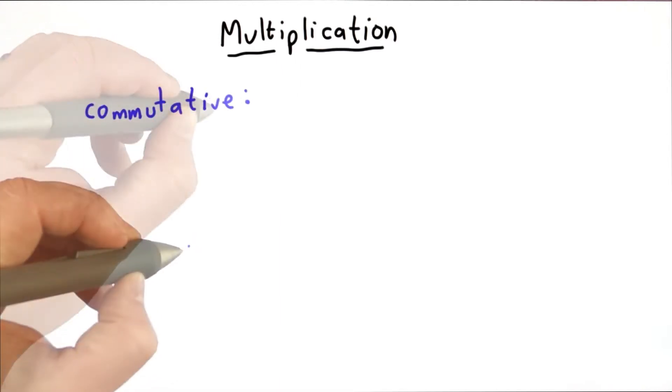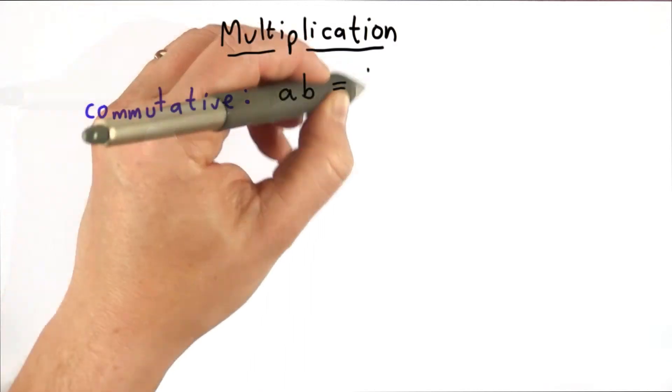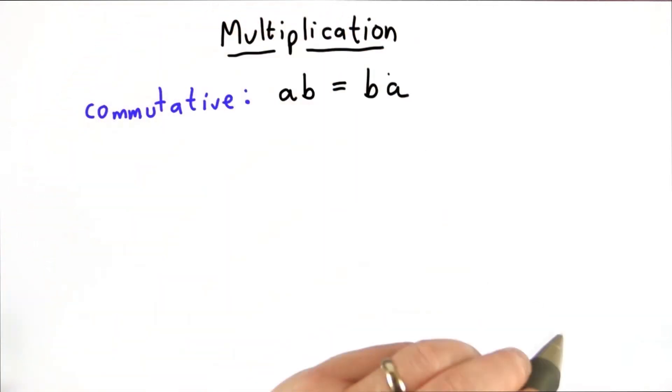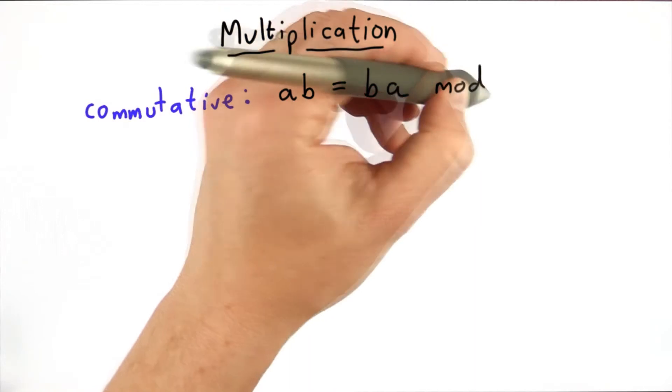The first is that it's commutative. That means a times b is always equal to b times a. This is true on integers, and it's also true using any modulus.